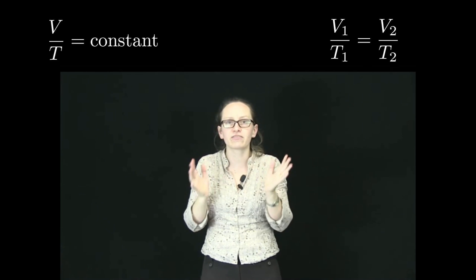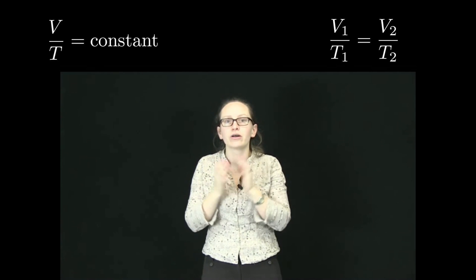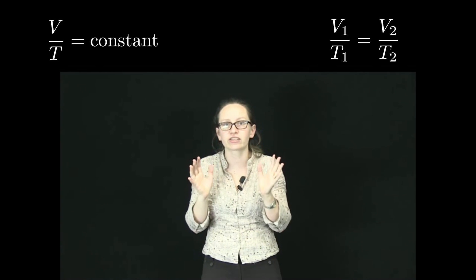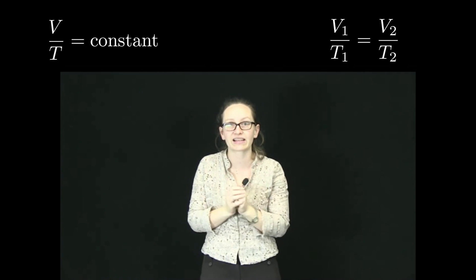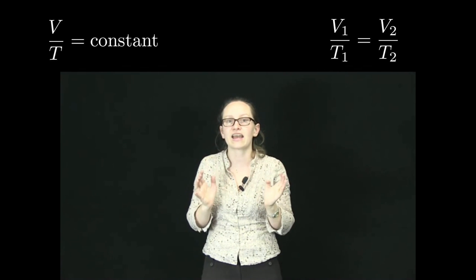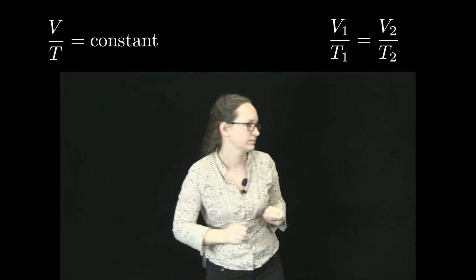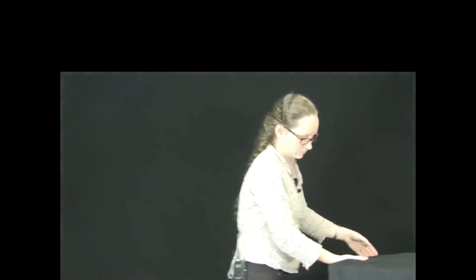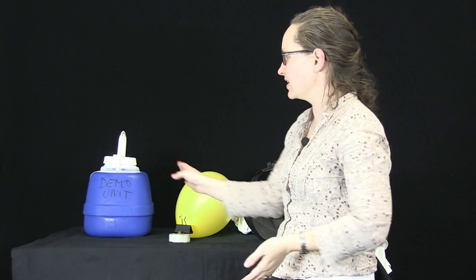Let's have a look at a demonstration where we'll change the temperature of something quite dramatically and see how its volume changes. What we have here is some liquid nitrogen, which is at 77 Kelvin, which is minus 196 degrees Celsius.